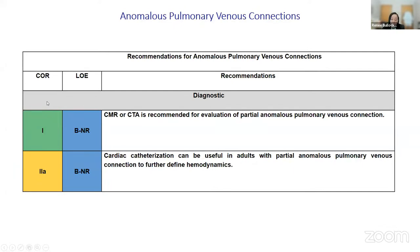CMR and CT have a Class 1 recommendation for anomalous pulmonary venous connections. This is especially important when you have a patient with a massively dilated right ventricle and right atrium but no obvious atrial or ventricular septal defects — one critical diagnosis not to miss is sinus venosus ASD. Patients with sinus venosus ASD can have partial anomalous pulmonary venous connections. Cross-sectional imaging with CMR or CT is essential to look for this pathology.